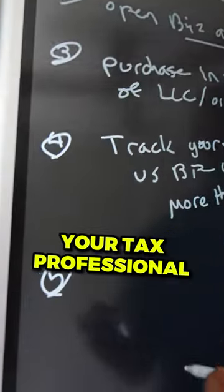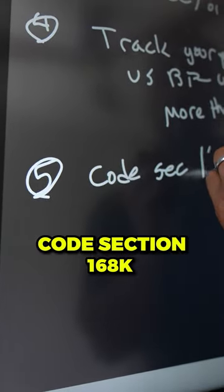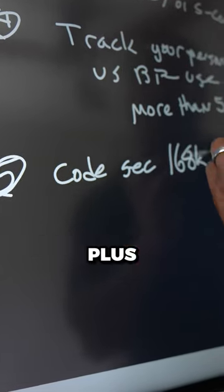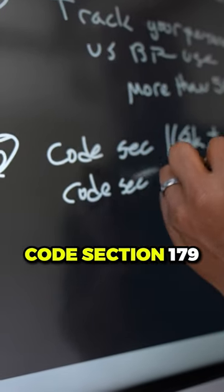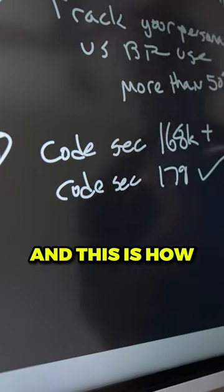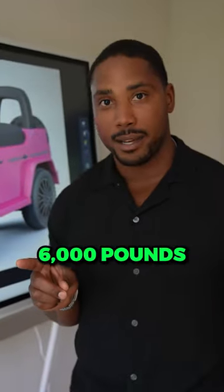The last step is making sure your tax professional takes code section 168K plus code section 179. And this is how you're able to write off a car that weighs over 6,000 pounds.